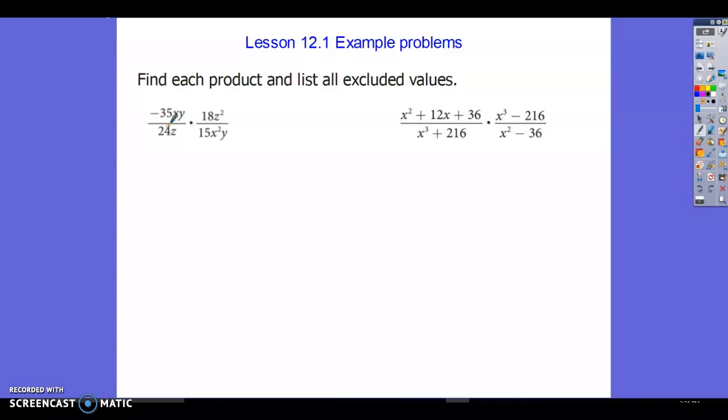The first thing we need to do is factor. So I can rewrite 35 as negative 7 times 5 and then times x times y.